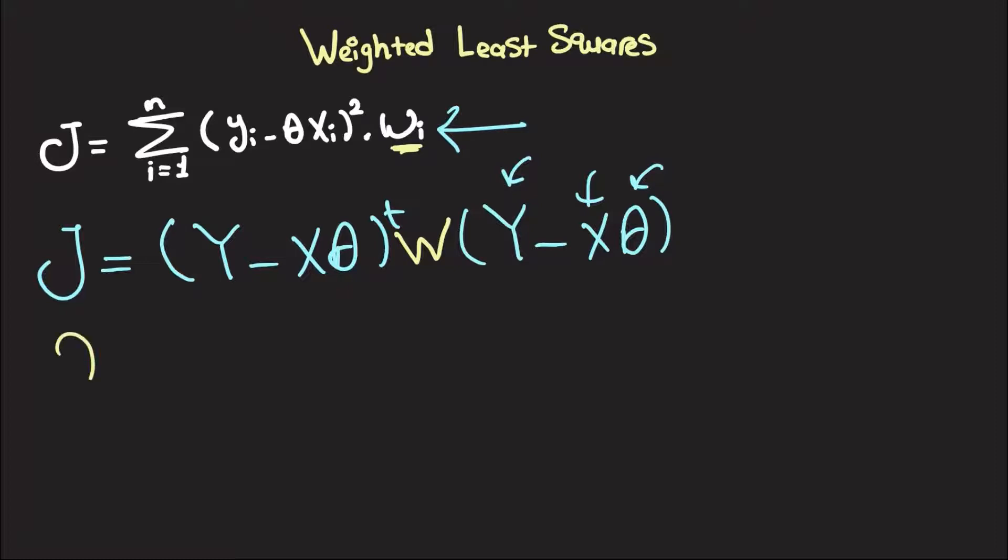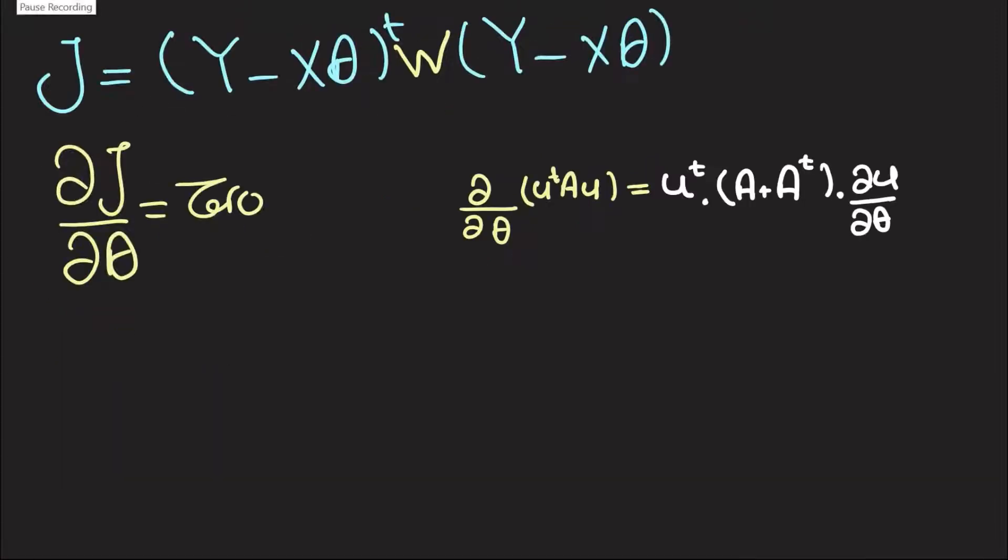And then we're going to go through the usual steps. So, we want to find partial j over partial theta and then equate that to 0. And this should be fairly easy to accomplish if you remember this matrix calculus identity that we've covered maybe four videos ago or something when we were differentiating vectors...